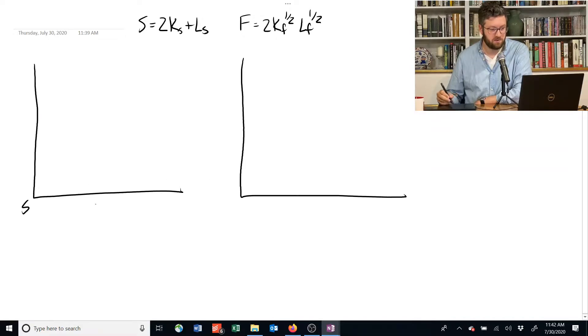This is our diagram about how we use capital and labor to produce shelter. Notice I've got a little KS for shelter. And this is our diagram for how we're using our capital and labor to make food.